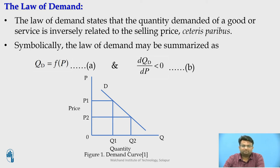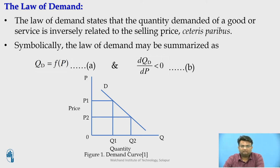Symbolically, the law of demand can be summarized as: Qd = f(P), and dQd/dP < 0. Equation (a) states that Qd, the quantity demanded, is a function related to the selling price. Equation (b) states that quantity demanded and price are inversely related to each other. The relationship is explained in the figure. The downward slope of the demand curve shows the inverse relationship between quantity demanded and selling price.